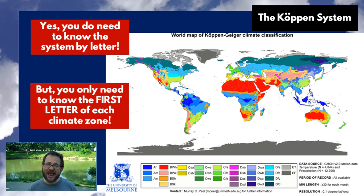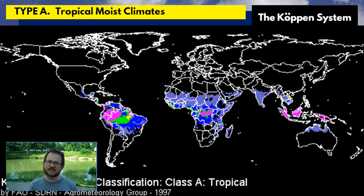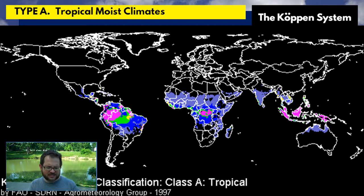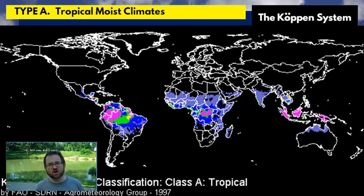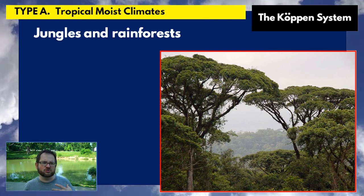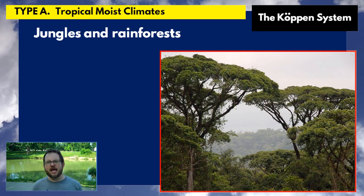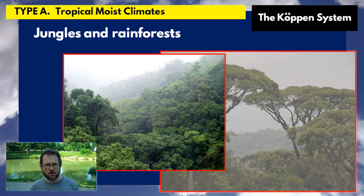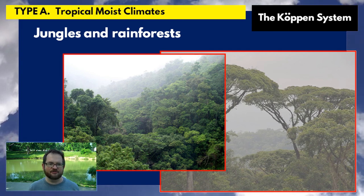The type A climates are the tropical moist climates — they're the ones highlighted on the map here. There are several different subtypes of type A, but broadly they're all going to be tropical and moist: jungles and rainforests associated with the ITCZ.